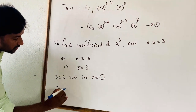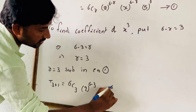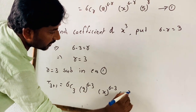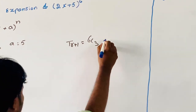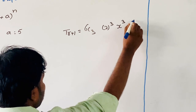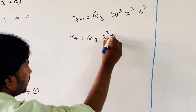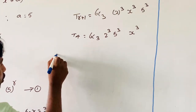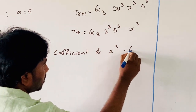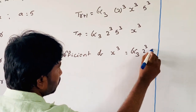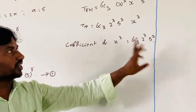Substituting r = 3 in equation 1: T(3+1) = 6C3 times 2^(6-3) times x^(6-3) times 5³. So T4 = 6C3 times 2³ times x³ times 5³. Therefore, the coefficient of x³ is equal to 6C3 times 2³ times 5³.